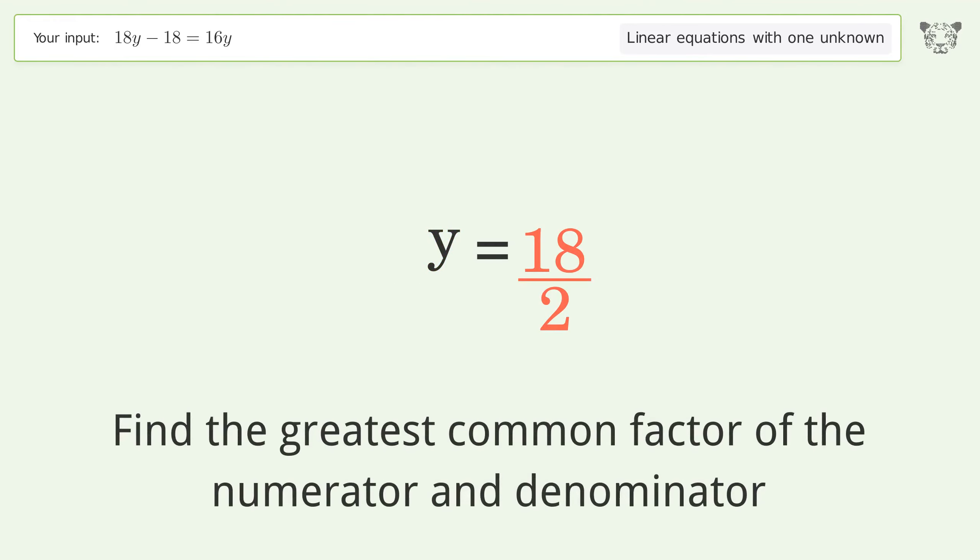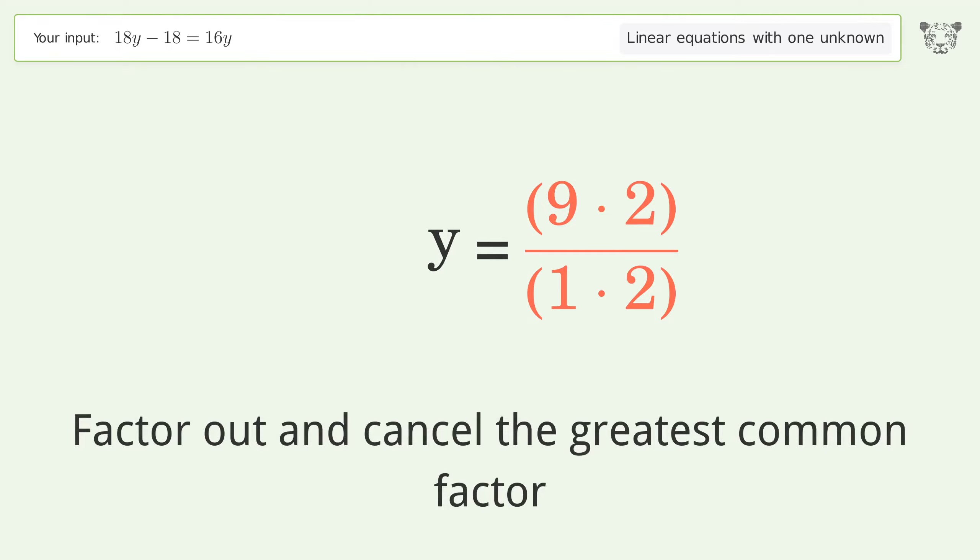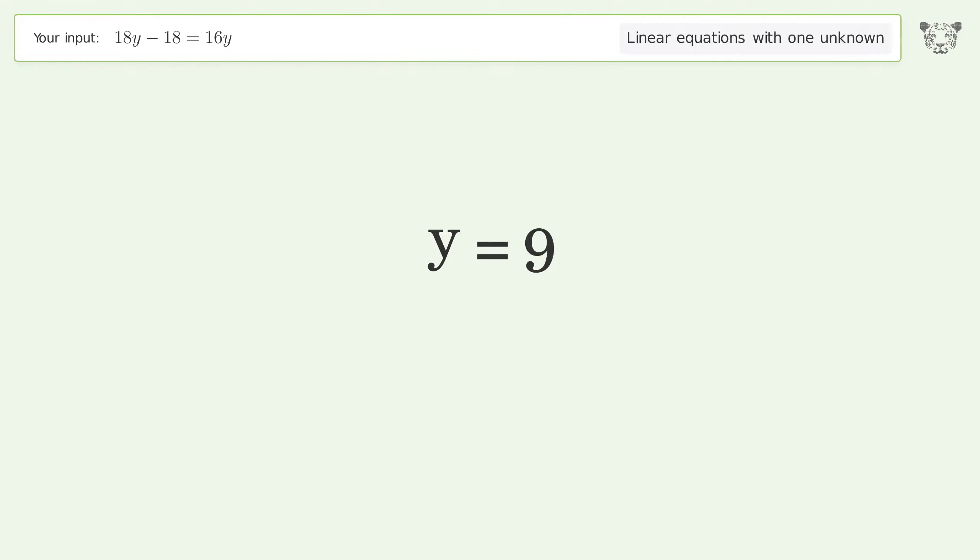Find the greatest common factor of the numerator and denominator. Factor out and cancel the greatest common factor. And so the final result is y equals 9.